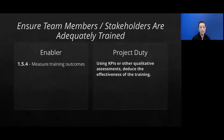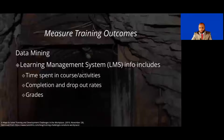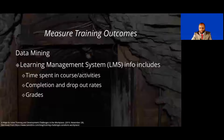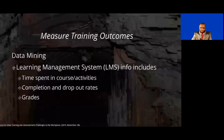Number four is measure the training outcomes. The project manager could use KPIs or other qualitative assessments to deduce the effectiveness of training. When we talk about measuring training outcomes, a learning management system could be used to track time spent in course activities, completion of activities or courses, dropout rates, and grades.